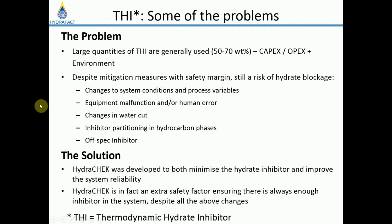Typical reasons for hydrate formation include changes in system conditions and process variables, equipment malfunction, or human error. Probably the most common reason is changes in water cut — if water cut increases while inhibitor injection rate remains constant, the inhibitor concentration in water decreases, reducing the inhibition effect. Other important factors are inhibitor partitioning into hydrocarbon phases and off-spec inhibitor with insufficient purity.